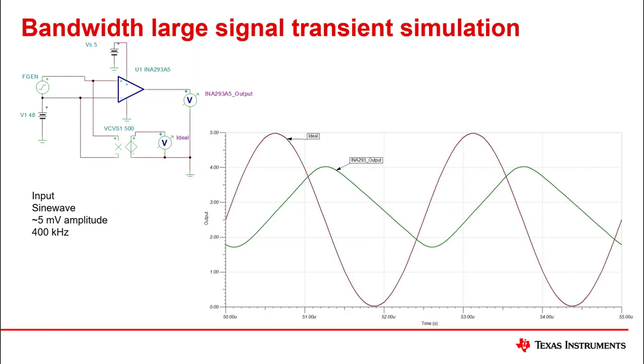Here is a transient response where the INA 293A5 is slew rate limited. This is the same frequency with the amplitude change to require a signal of 6.25 volts per microsecond slew rate. Since the INA 293A5 is limited to 2 volts per microsecond, it will not be able to produce the ideal signal due to the limited slew rate. Therefore, this is considered larger signal and the bandwidth is not observed at the output as the small signal response.